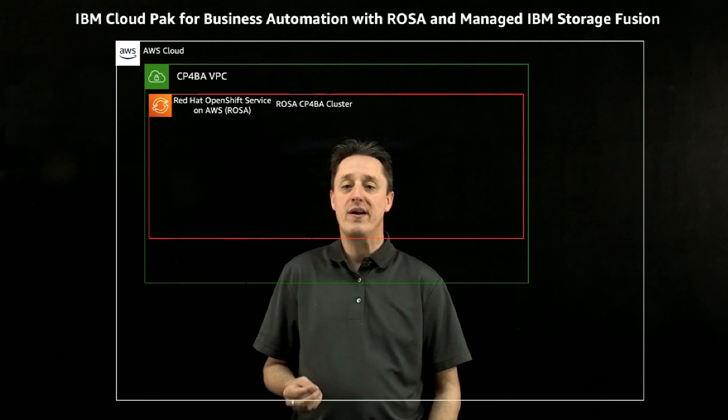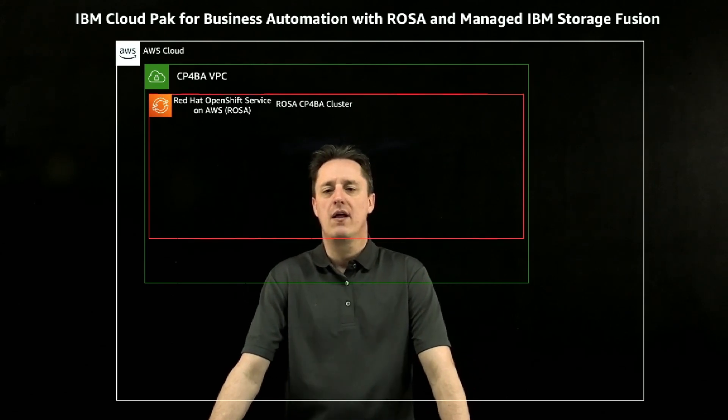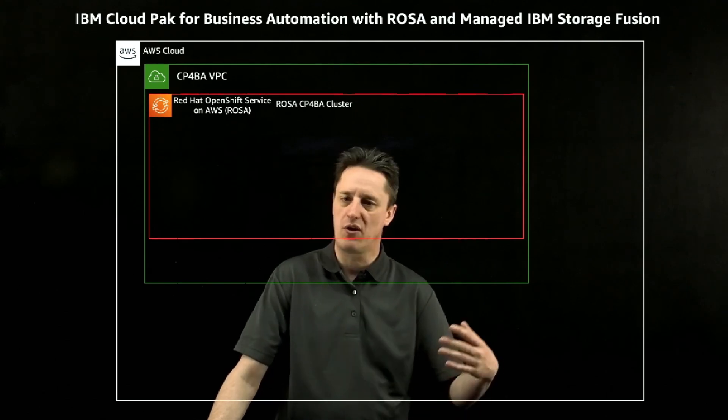When we look at Cloud Pak for Business Automation on AWS, we are going to see that deployed into a single AWS region inside of a VPC, and we're going to see OpenShift in the AWS account. In this particular discussion, I'm focusing on the Red Hat OpenShift Service for AWS — a managed offering of OpenShift, which means the customer doesn't need to add operational capacities to manage OpenShift. It is done for them by Red Hat SRE teams. Scaling, replacements, health monitoring — all of those things are taken care of on behalf of the customer.